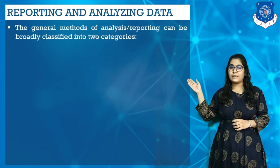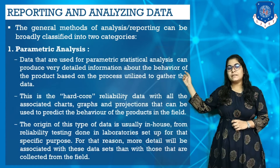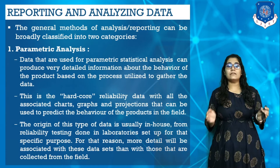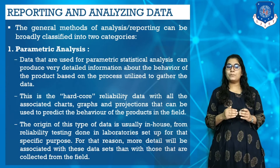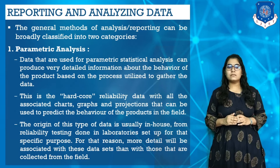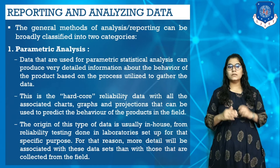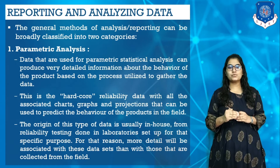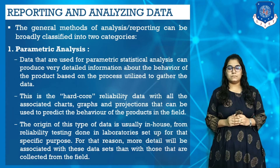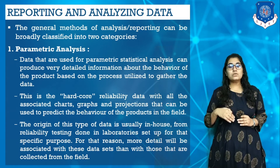Now let's discuss which general methods of analysis and reporting can be broadly classified into two categories. First, parametric analysis. Data that are used for parametric statistical analysis can produce very detailed information about the behavior of the product based on the process utilized to gather the data. This is the hardcore reliability data with all the associated charts, graphs and projections that can be used to predict the behavior of the products in the field. The origin of this type of data is usually in-house from reliability testing done in a laboratory setup for a specific purpose. For that reason, more detail will be associated with this dataset than with those that are collected from the field.